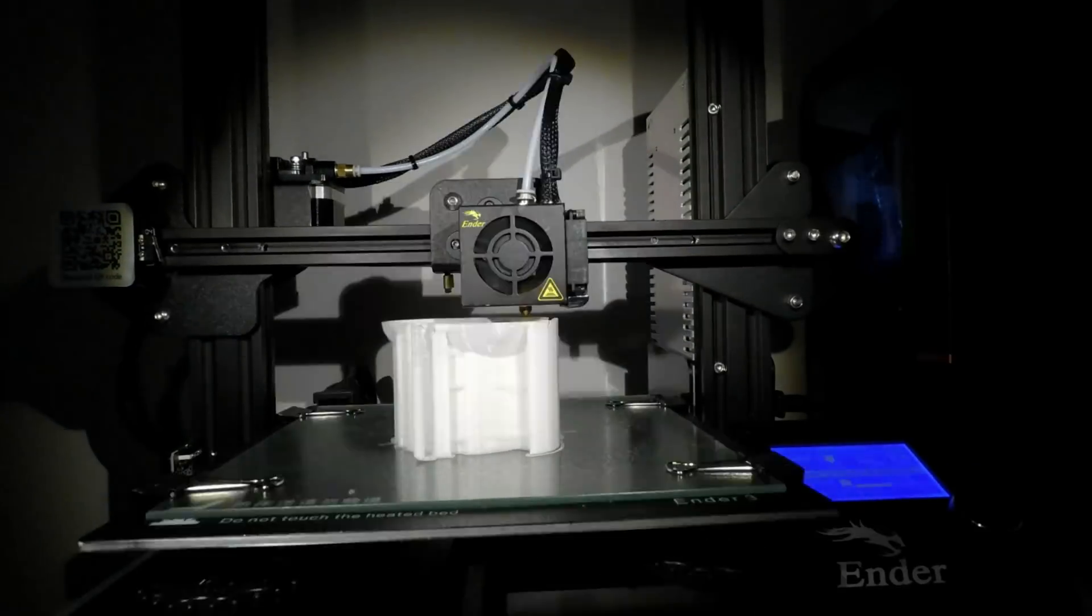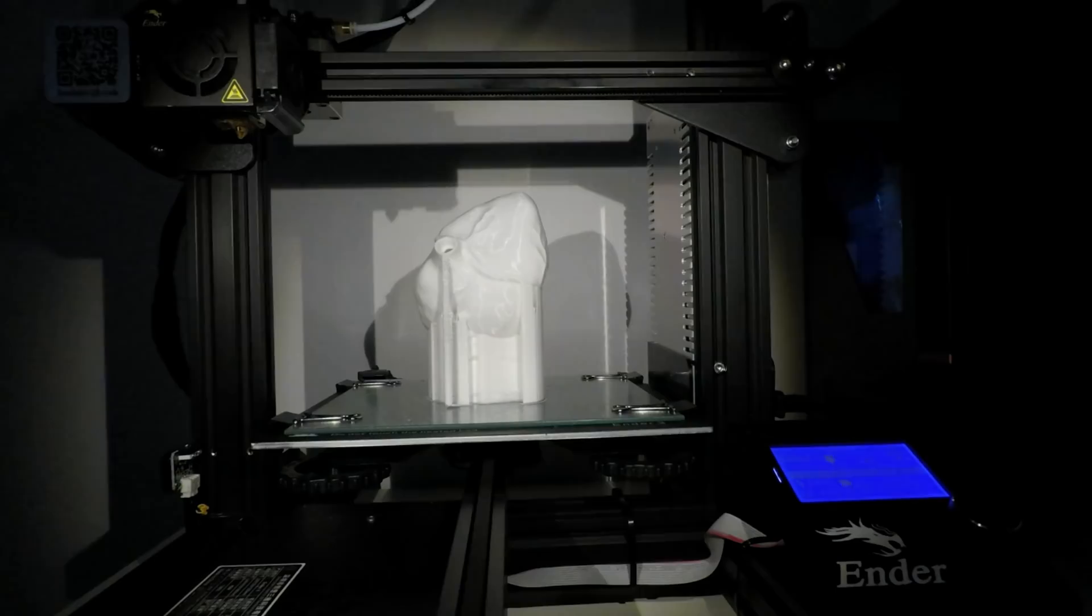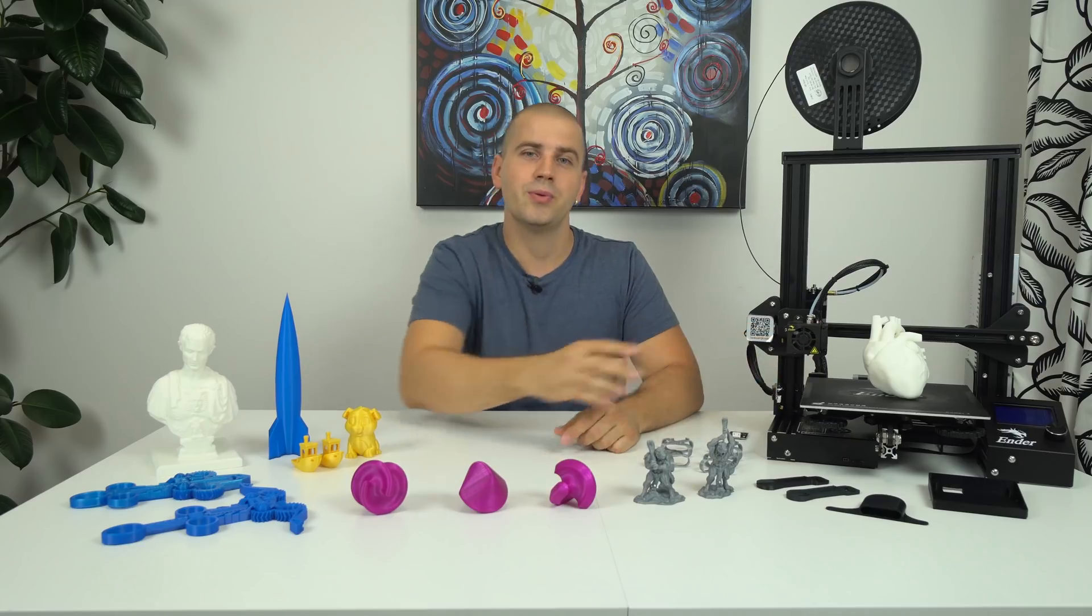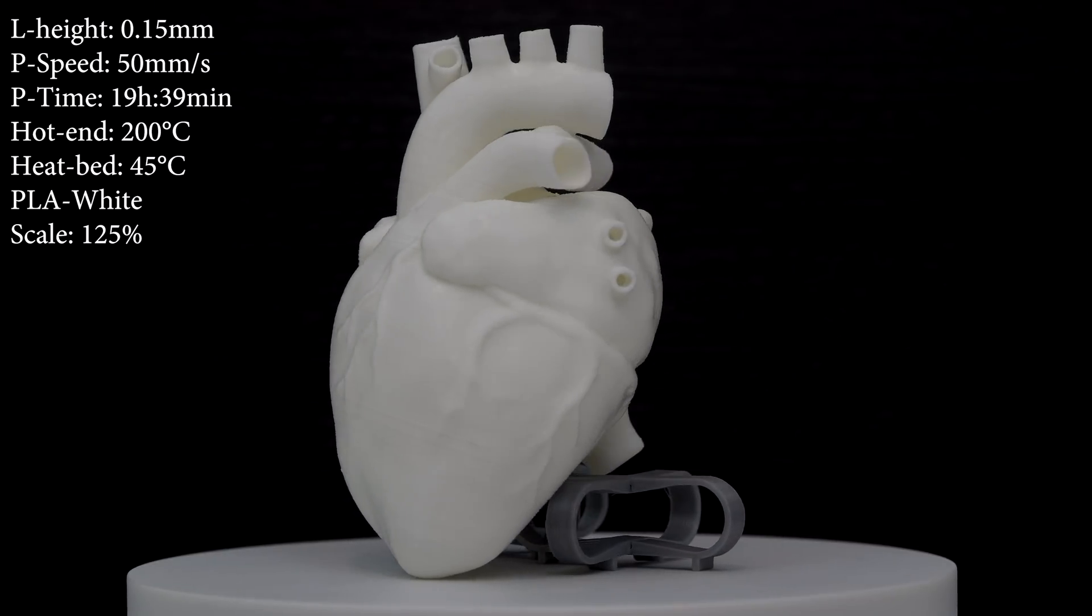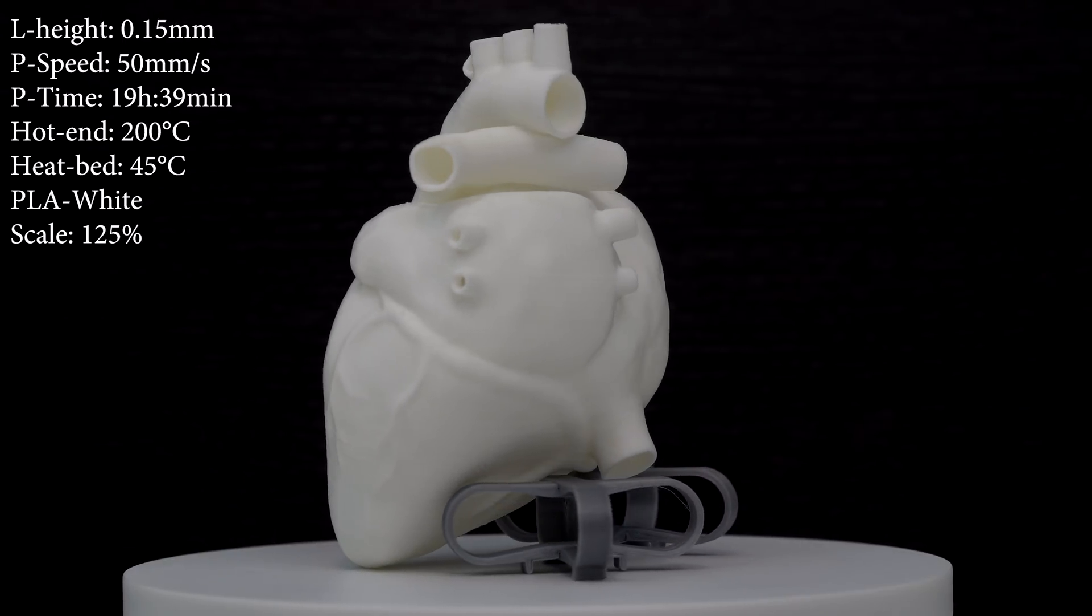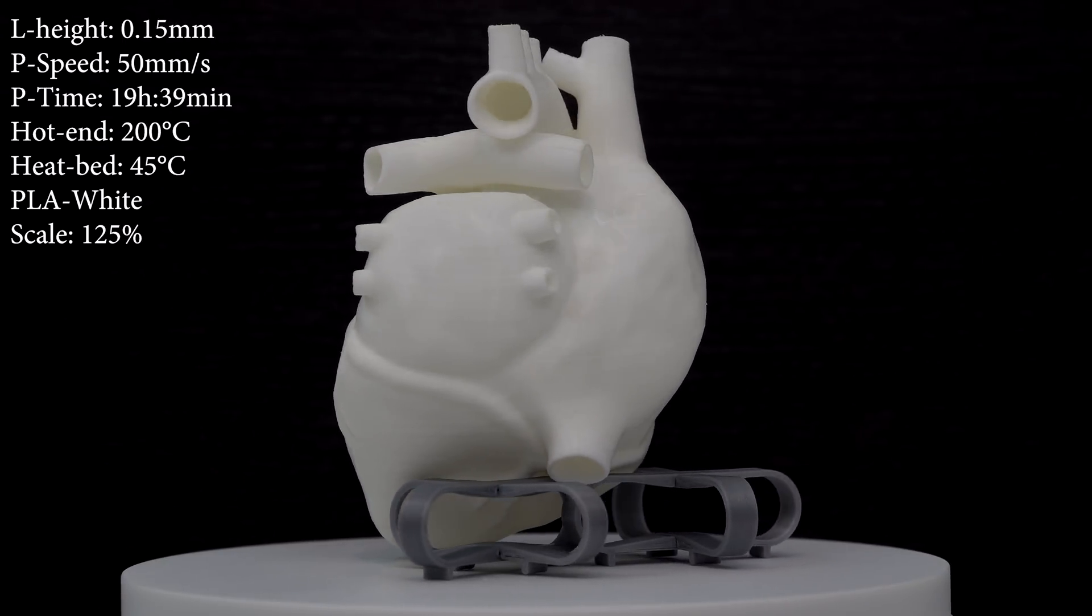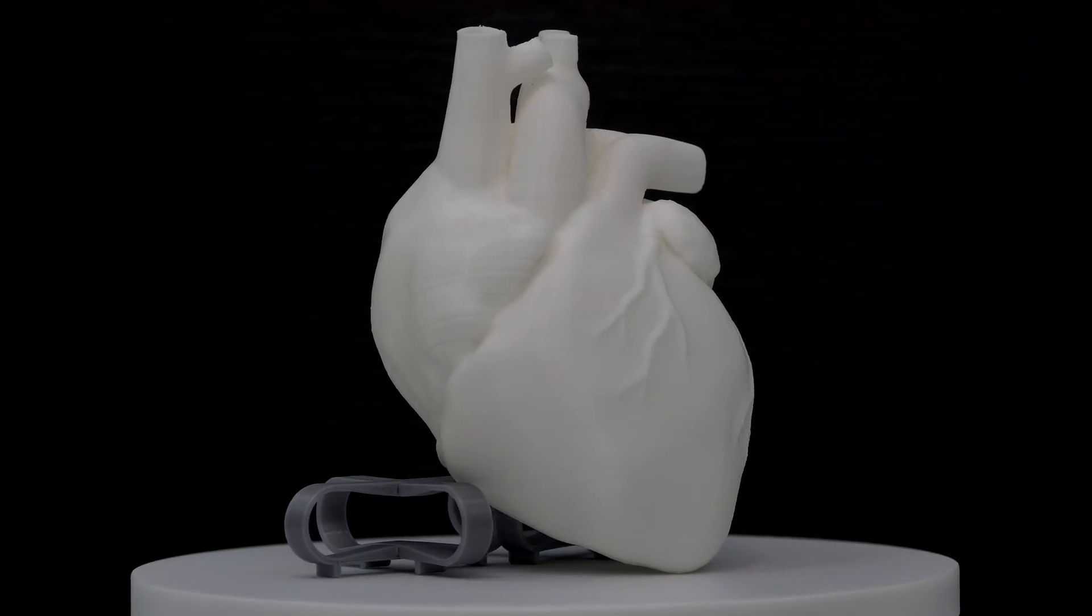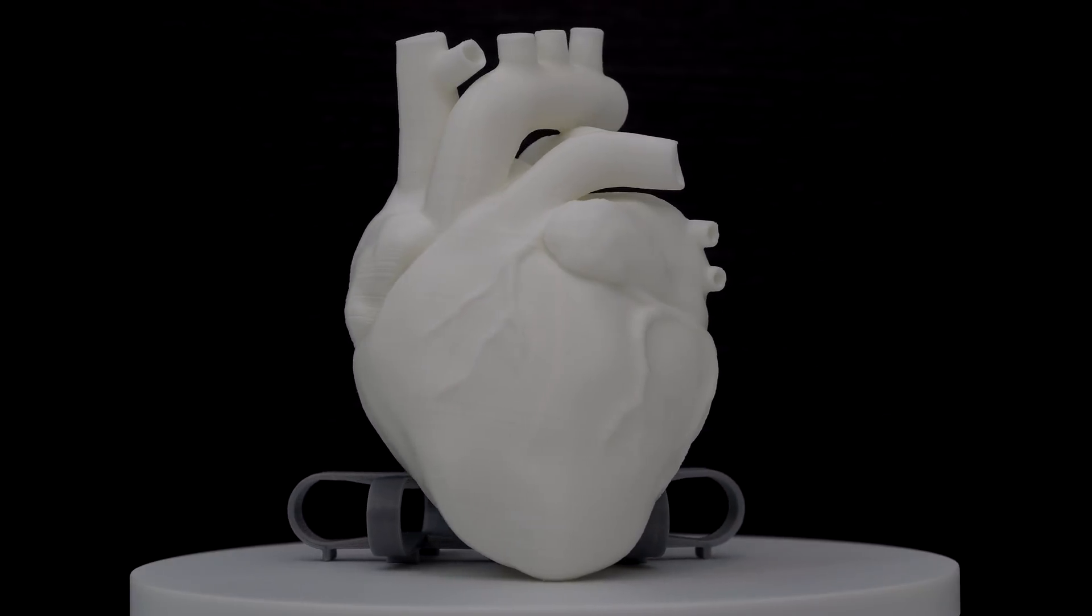For my next print, I wanted to print something larger to see how this printer will perform in a long print. I found this model of the human heart and I printed in real size. The print took 22 hours to complete and after I took all the supports, results were awesome. I printed this model with 0.15mm layer height to save some print time and indeed it looks very nice.